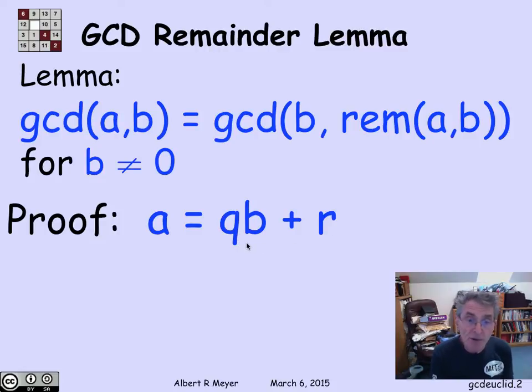The quotient has the property that q times b plus the remainder is equal to a. The remainder is always going to be smaller than a. It'll be in the range from 0 up to, but not including a.